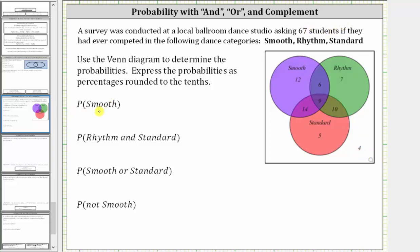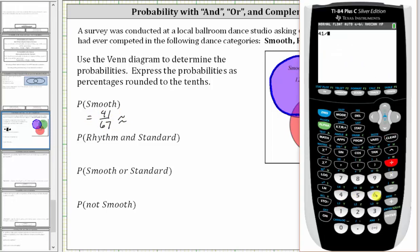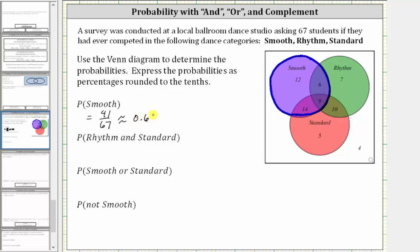We're first asked to find the probability a student competed in smooth. Looking at the Venn diagram, here is the smooth set, which indicates the number of students that competed in smooth. The number of students is 12 plus 6 plus 9 plus 14, which is 41. So 41 out of 67 students competed in smooth, and therefore the probability of smooth is 41/67. 41 divided by 67 to three decimal places is approximately 0.612, which is equal to 61.2%.